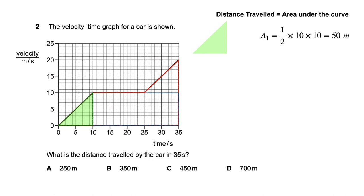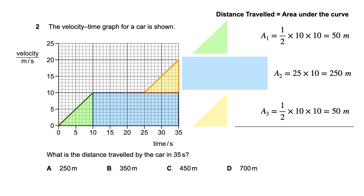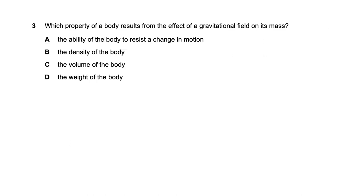The rectangle has base 35 minus 10 equals 25 and height 10, giving area 250 meters. The next triangle is similar to the first, so we can multiply by two or calculate again. Adding all the areas gives 350 meters — that's option B. If you notice symmetry you can simply multiply by two, but always double-check the units.